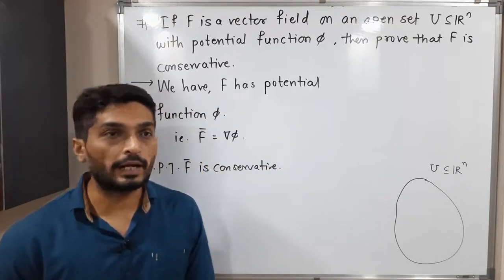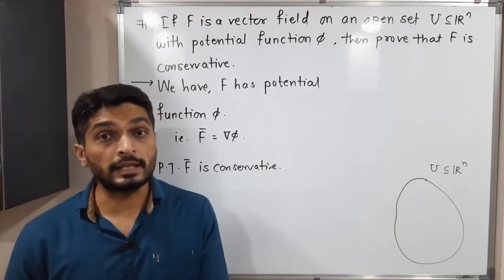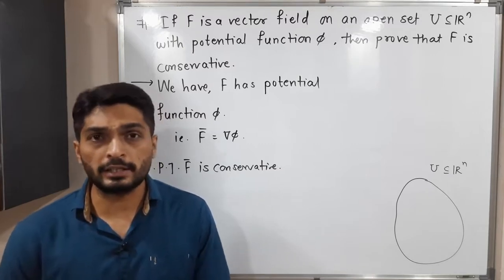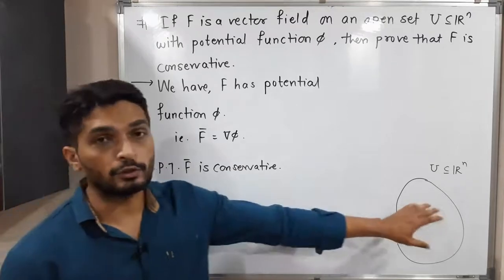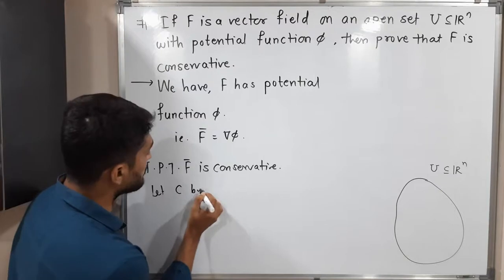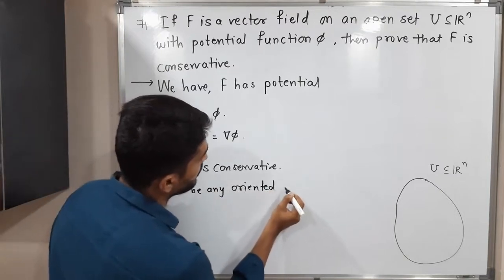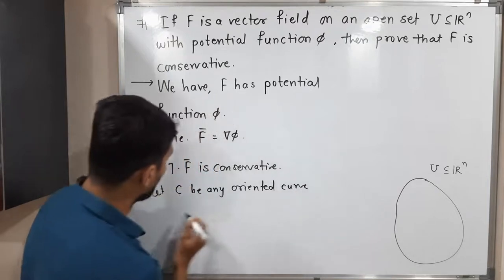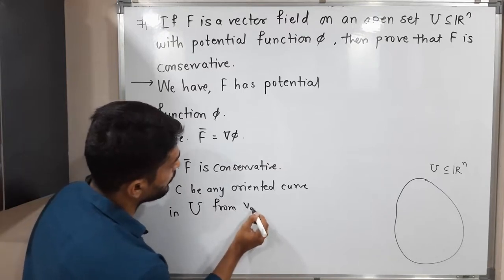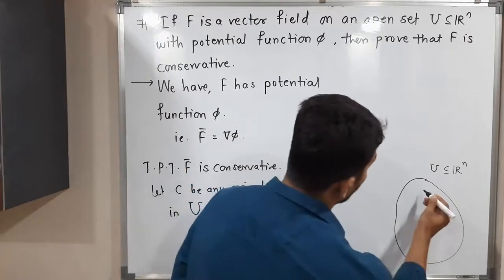What we have to prove is that f-bar is conservative, meaning the line integral of f is independent of the curve — it depends only on the endpoints. So let us consider any arbitrary oriented curve C in the set U, which is a subset of R^n.